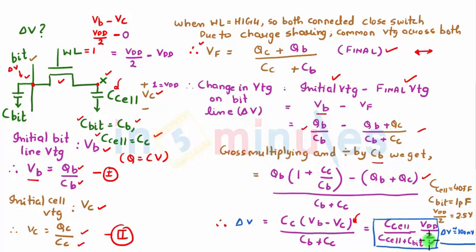So that is what I have put here. It's a difference. I'm ignoring the negative sign or a positive sign. I'm just putting the difference to be VDD by 2. So it's nothing but C cell upon CB, which is C bit plus C cell, into VDD by 2.